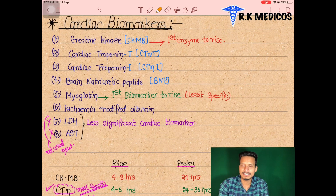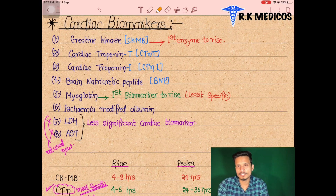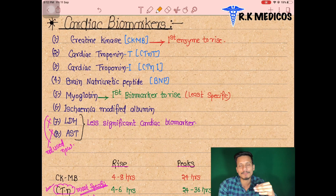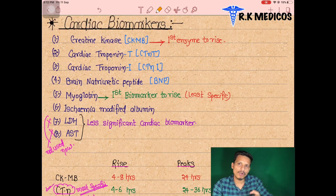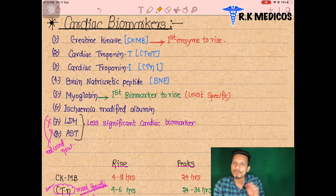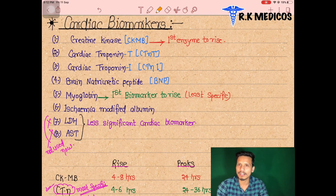Hello, welcome to RK Medicos. In this section we are going to discuss about clinical enzymology part 2. In the previous part we already discussed about isoenzymes — alkaline phosphatase, creatine kinase, and lactate dehydrogenase. Now we are going to see the application of all these enzymes: how cardiac biomarkers work when the heart is damaged, which enzymes or isoenzymes rise in the blood, and which ones are specific or least specific after myocardial infarction.